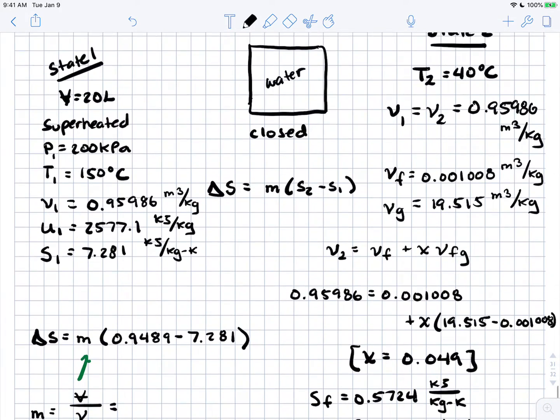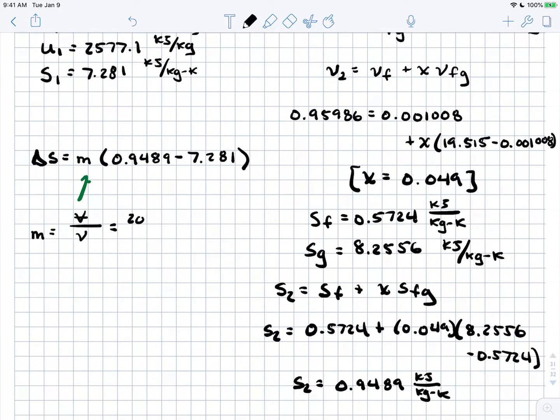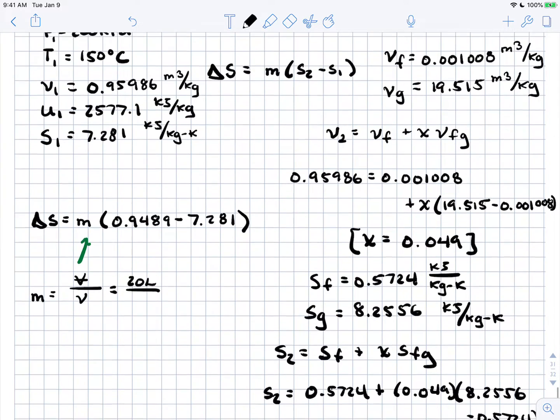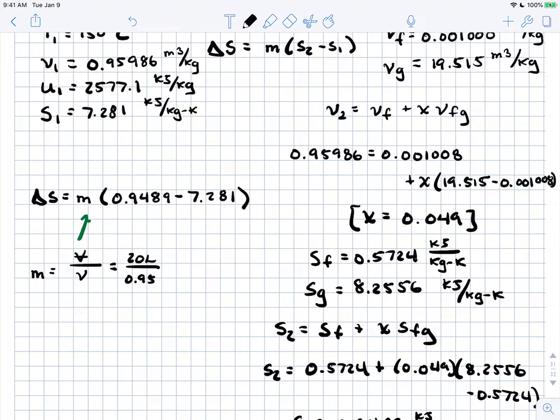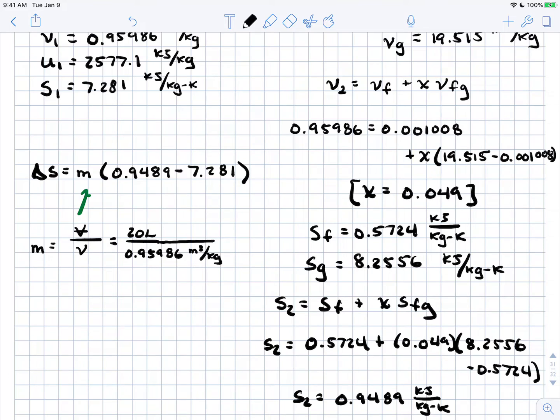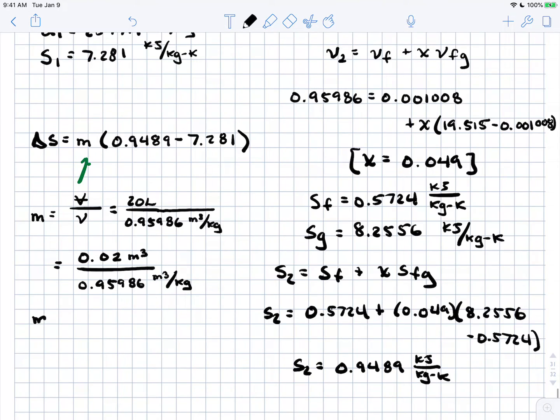Mass is determined by volume divided by specific volume. We know both are constant, so we can use either state 1 or 2. We have 20 liters and specific volume is 0.95986 m³/kg. To make units match, let me convert liters to cubic meters by dividing by 1000. The mass of water in our system is 0.021 kilograms.